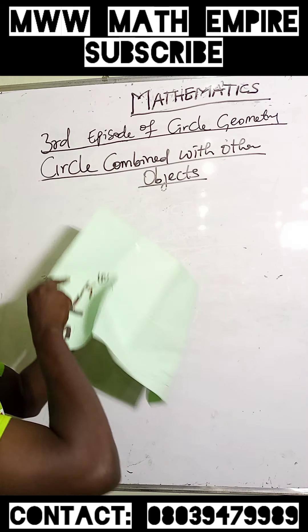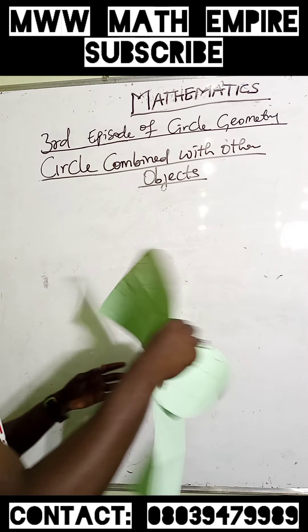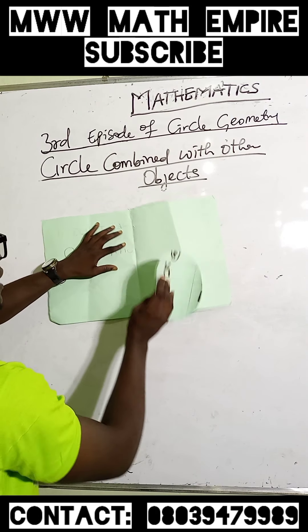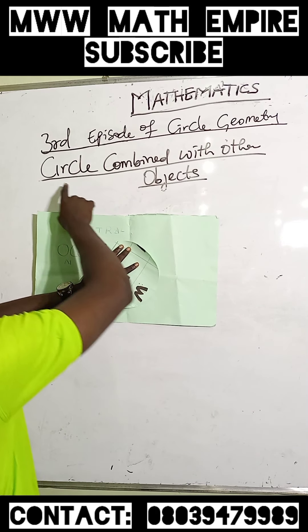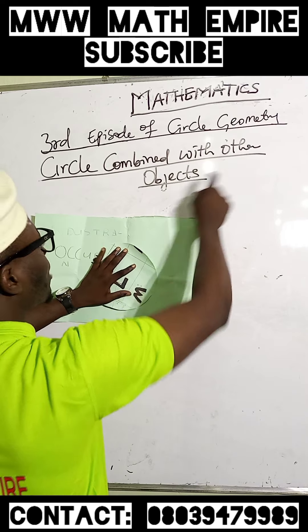I want you to take a look at this. This is carbon sheet. Remember the topic says circle combined with other objects.